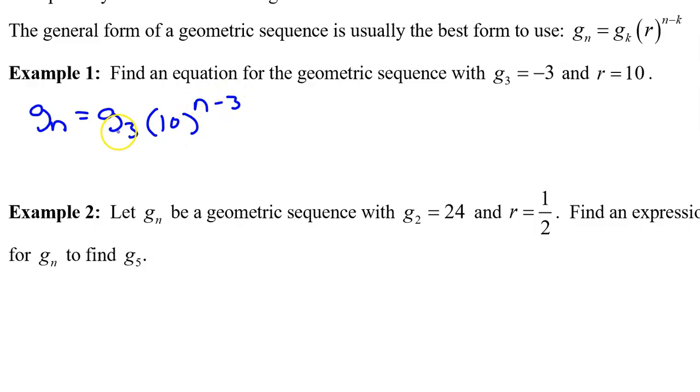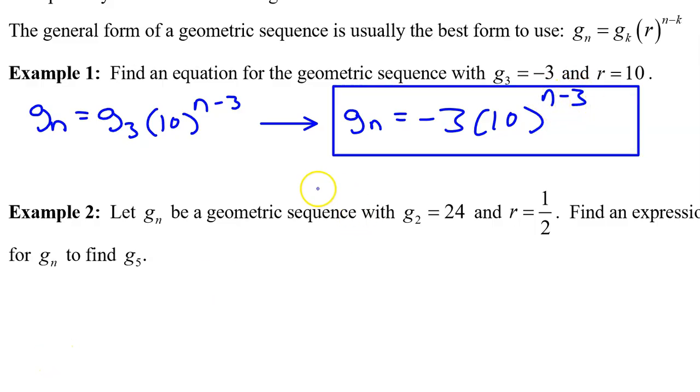But we know that g3 is negative 3, so let's just fill that in. So we get gn is equal to negative 3 times 10 to the n minus 3 power. That's it. This expression will give us any term of the geometric sequence.